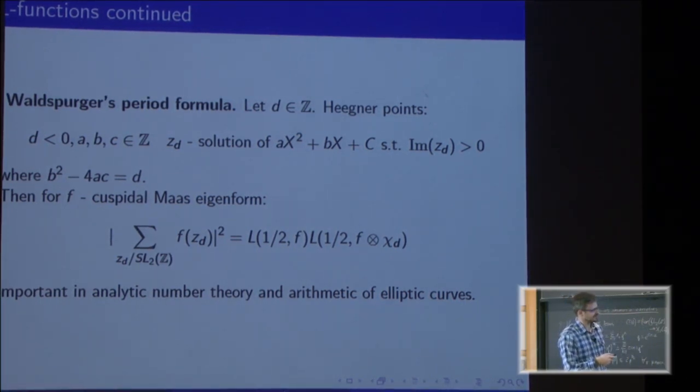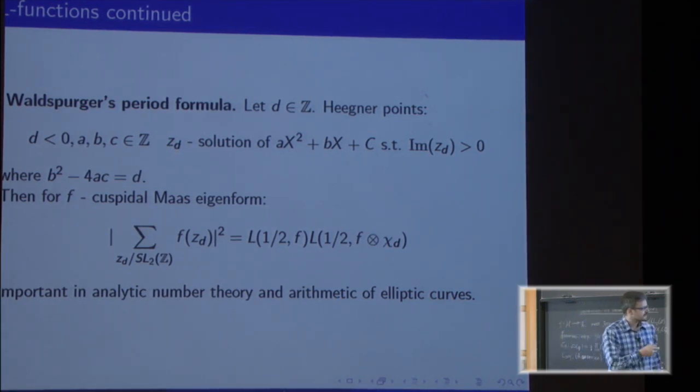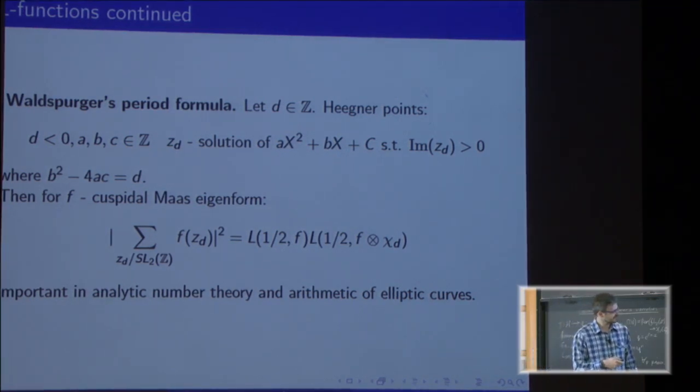Such a formula is important from the point of view of analytic number theory and also from the point of view of arithmetic of elliptic curves, for example. What I do is work on a certain conjecture that generalizes such a formula. In order to explain how we can generalize such a formula, I need to introduce a different way of talking about such forms in the first place.